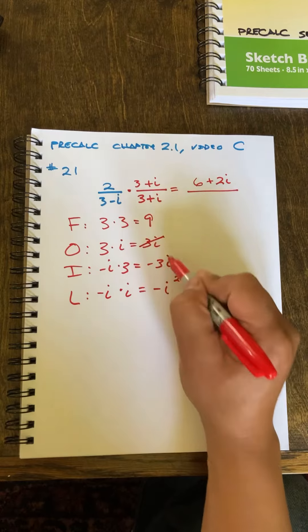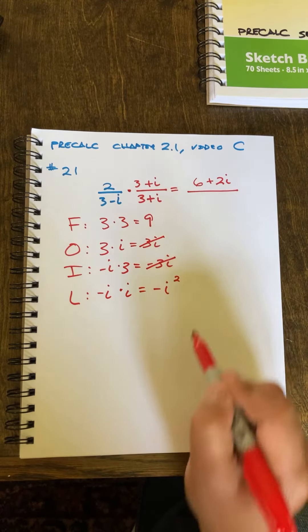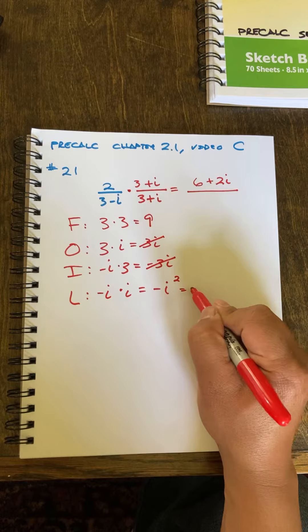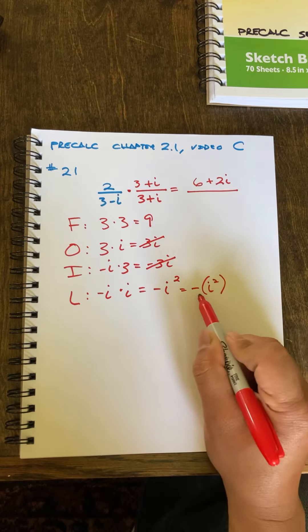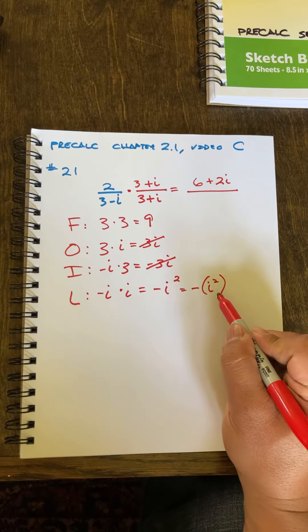So those are out. Now, this negative i squared is interesting. That's the same as if I put the negative out here and do i squared there.